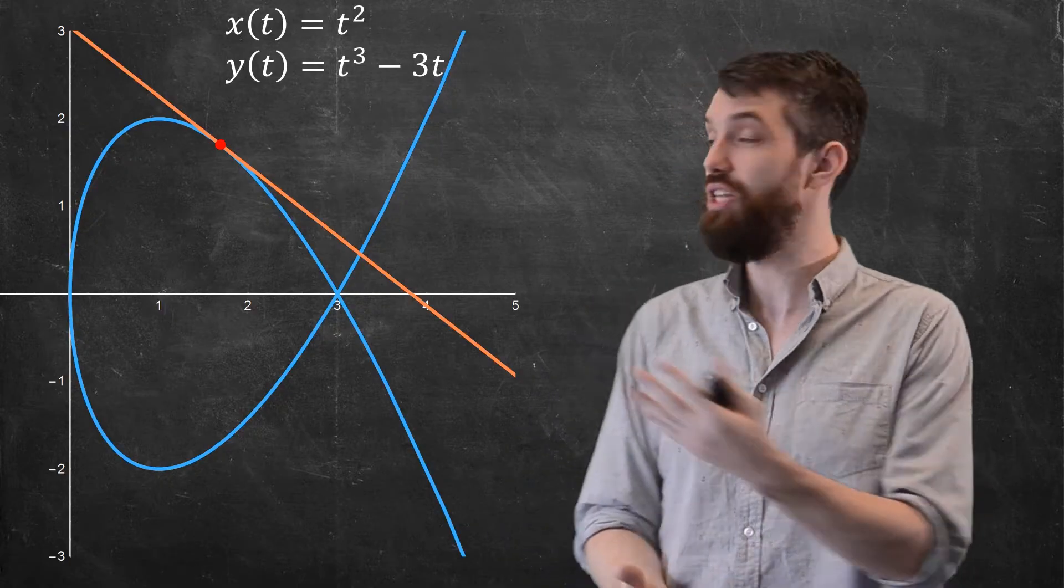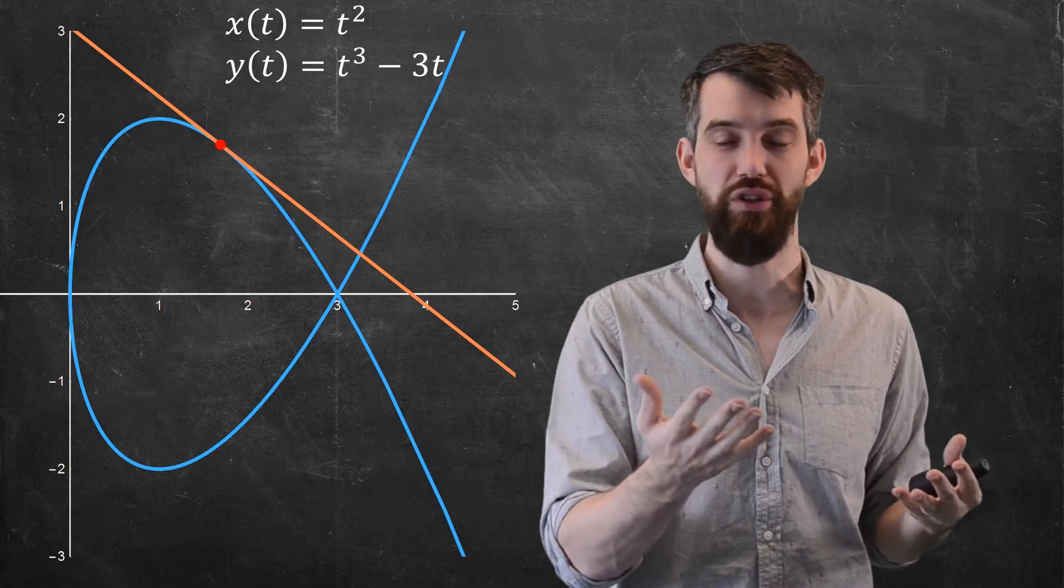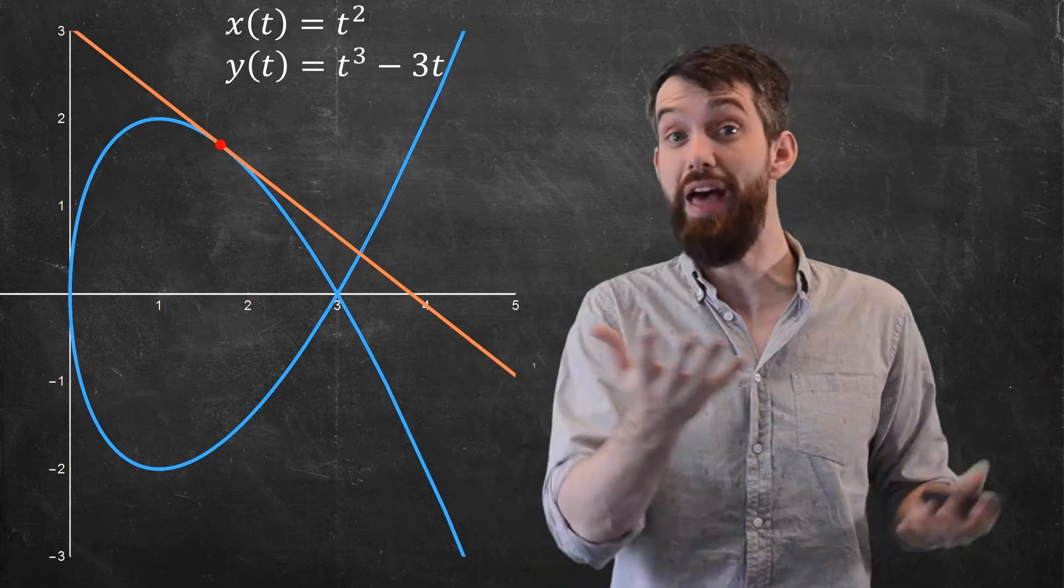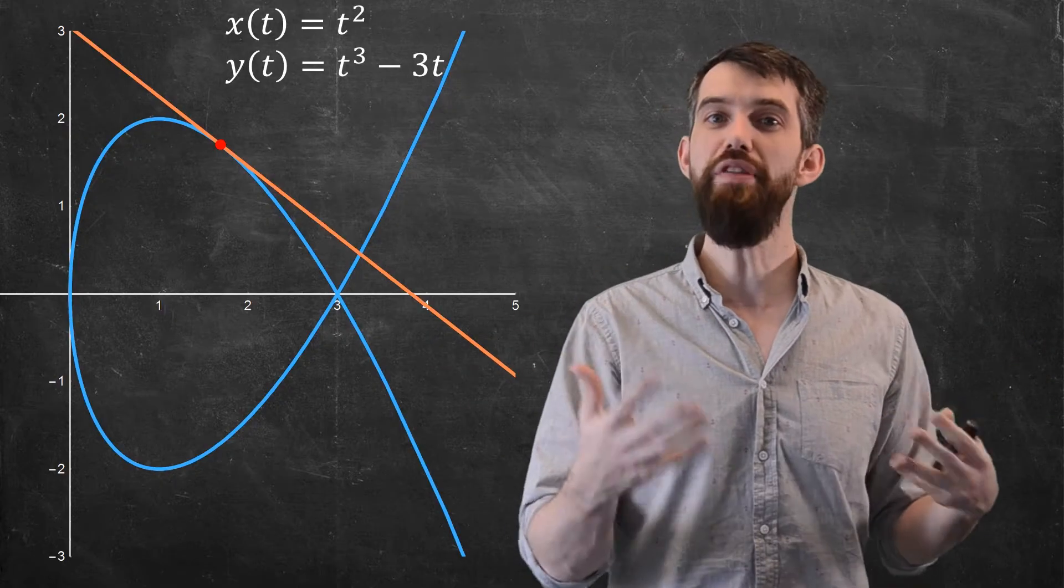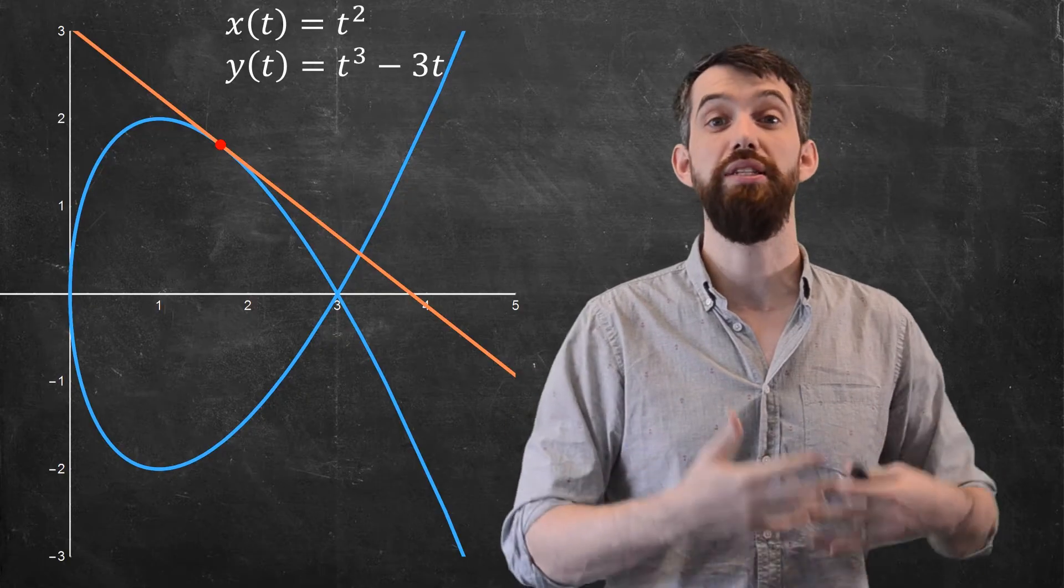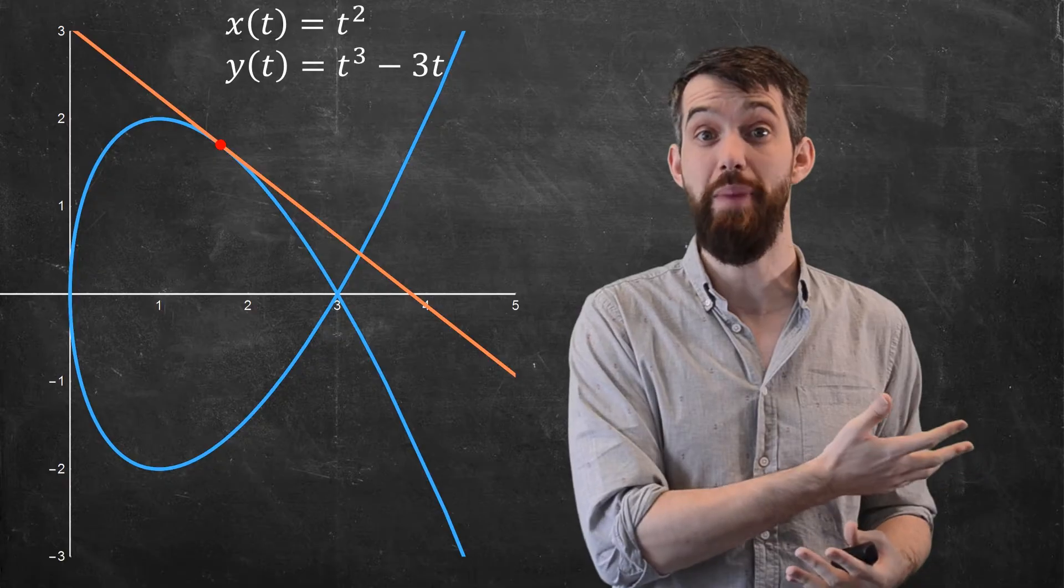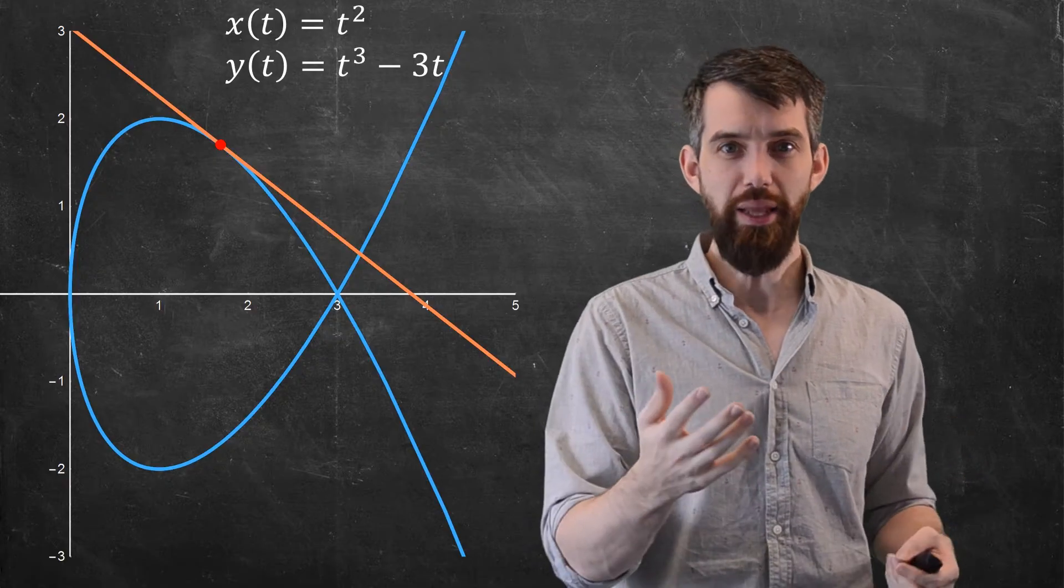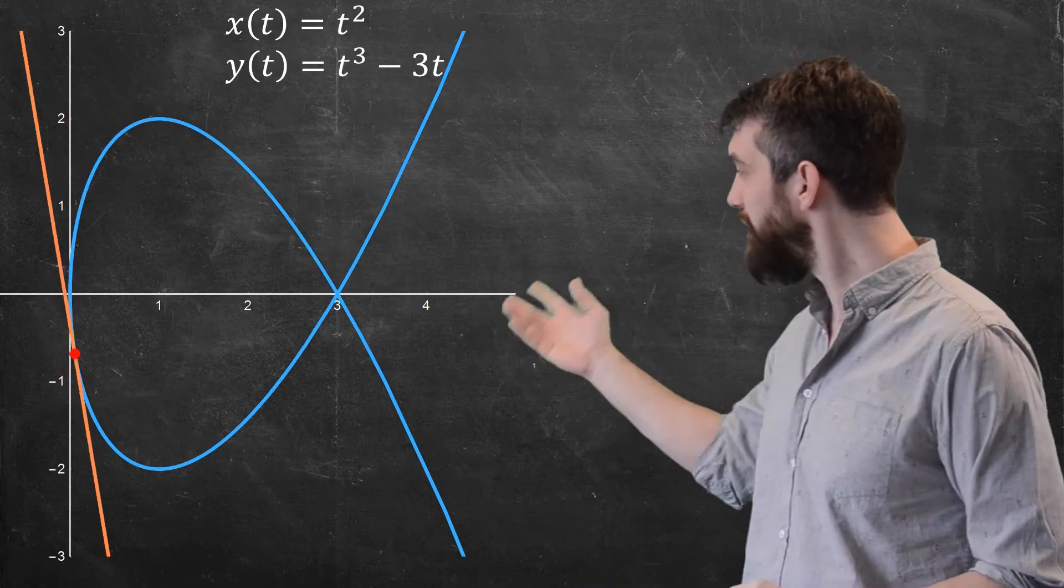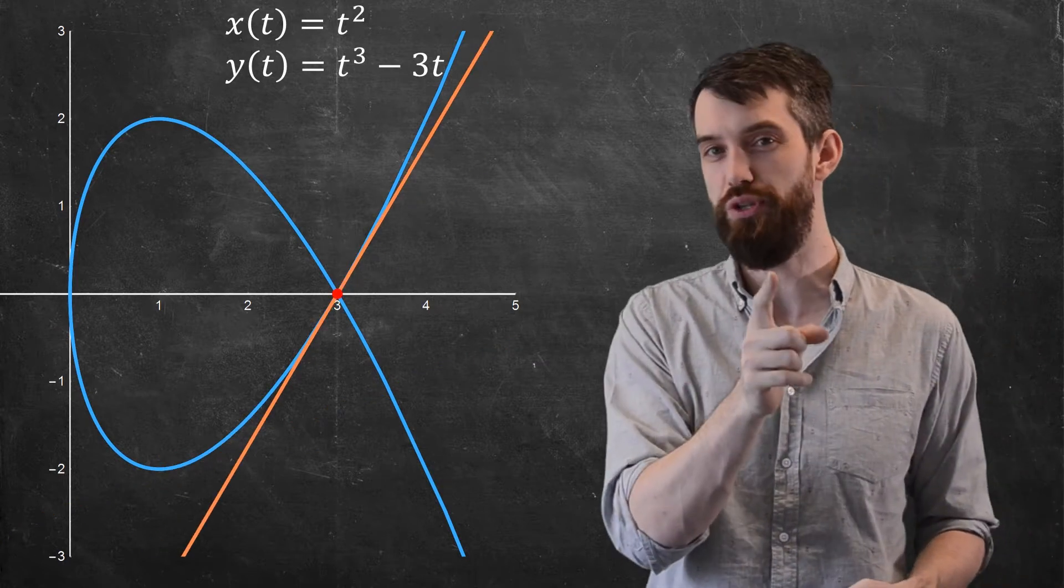And what we see is that we have a tangent line to that curve at some point. So the question is, what is the equation of that tangent line? Now, one of the things that becomes apparent when you start studying parametric curves is that it's actually a bit richer than it used to be in the past. So for example, let me consider the tangent line specifically at this point x = 3 and y = 0.